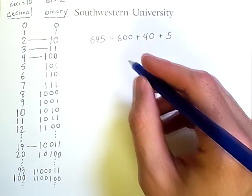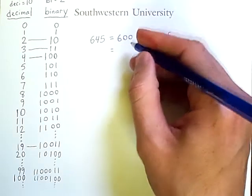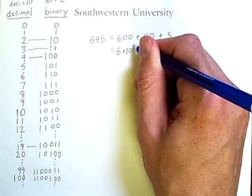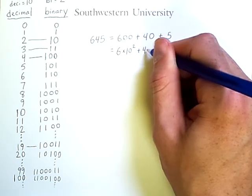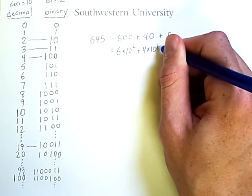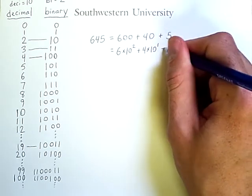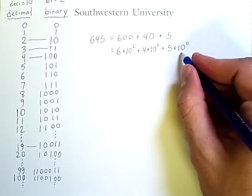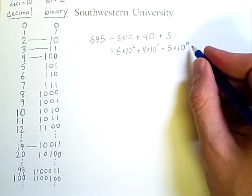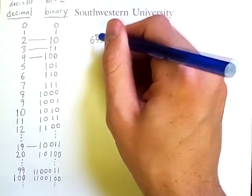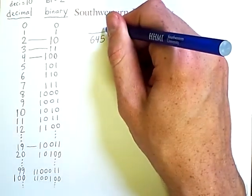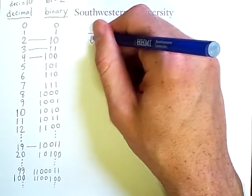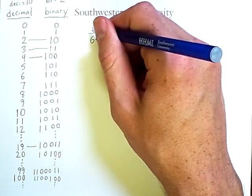Now, we can break this up more and show that 600 is 6 times 10 squared. And 40 is 4 times 10 raised to the 1, 10 to the 1 is just 10, plus 5 times 10 raised to the 0, remembering that any number raised to the 0th power is equal to 1. So these exponents correspond to positions here. This is position 0, this is position 1, this is position 2, and if there were more digits to the left, they would be in increasingly numbered positions.